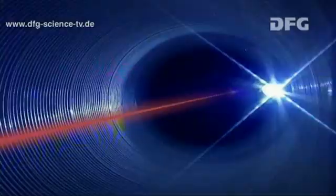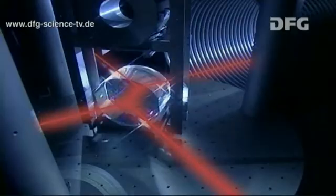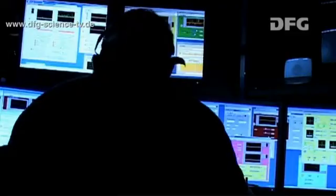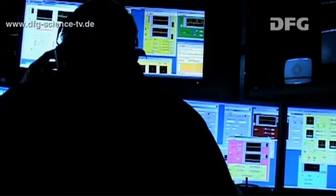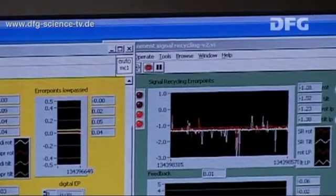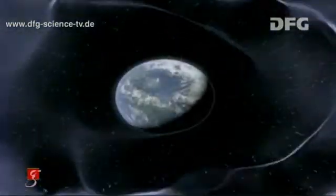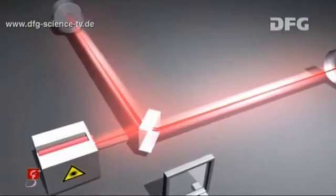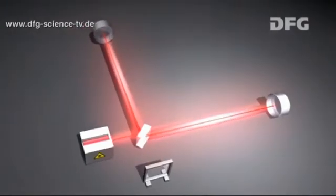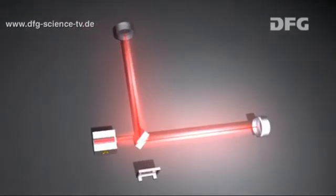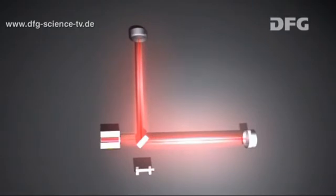The key to the possible detection of gravitational waves lies in the way they influence the mesh of space-time. If a periodic gravitational wave from space reaches us, then it causes the space-time mesh to oscillate, thereby changing the distance between the mirrors.